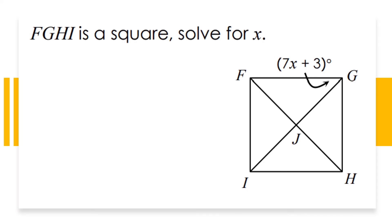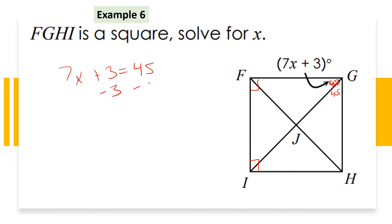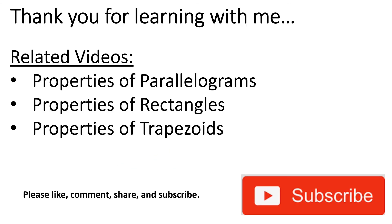This last example is to make sure we know how to find angles when given an expression. In a square, each diagonal-bisected angle is 45 degrees because the diagonals bisect the 90-degree corner angles. To solve for x, set the expression equal to 45 and solve the two-step equation. x is equal to 6.